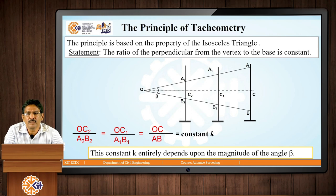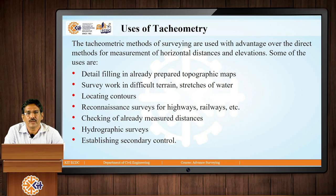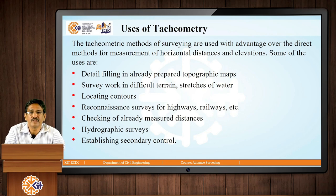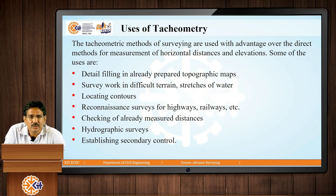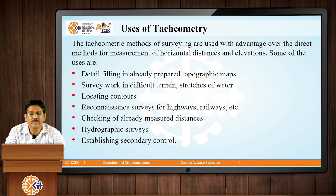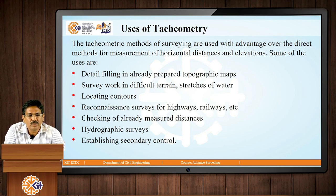This method is entirely dependent on the magnitude of angle alpha. Tachymetry is popular because it is fast and can be used in very adverse conditions, using trigonometrical functions to do indirect surveying. We are not directly measuring things with chains and tapes. Uses include filling in details on already prepared topographic maps, surveying difficult terrains, locating contours, reconnaissance surveys, checking already measured distances, and surveying stretches of water.